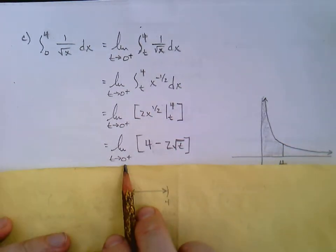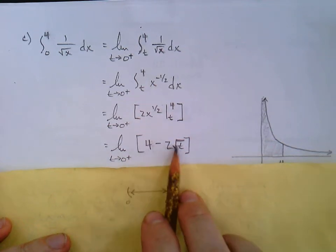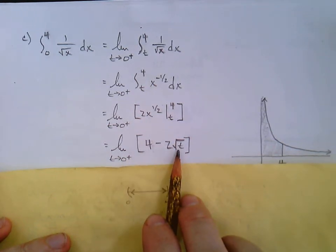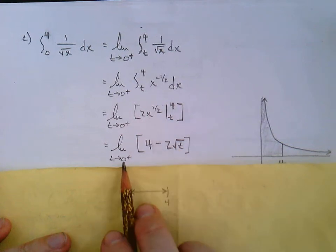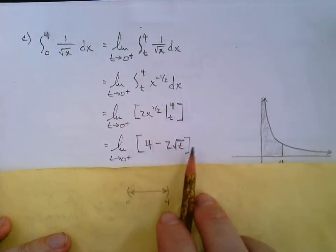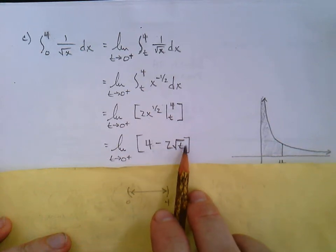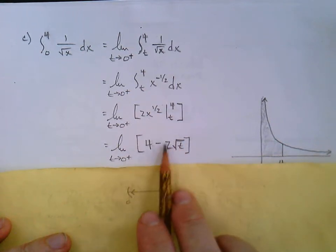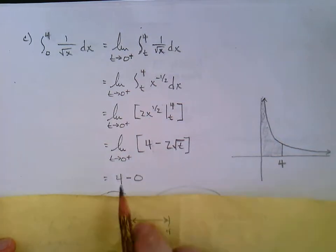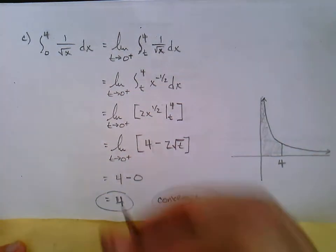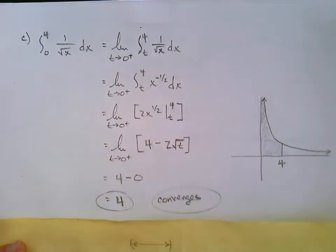And we'll go about plugging these in. Plugging in the 4 would be 2 times 2, gives you 4. And plugging in the t, minus 2 square root t. And finally, once those are plugged in, now we're going to evaluate that limit. Approaching 0 from the right. I can actually only take the limit to 0 from the right for a square root, since it does not exist from the left. So that's going to go to 0. And my answer here, 4 minus 0 is 4. And we would say this integral converges.